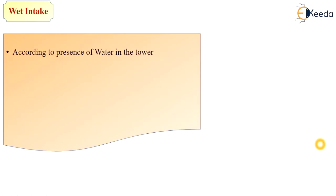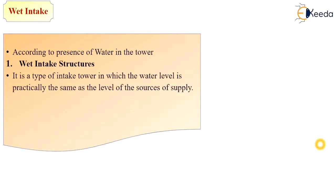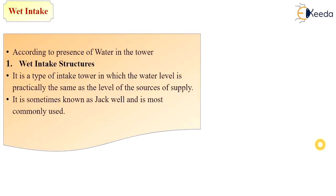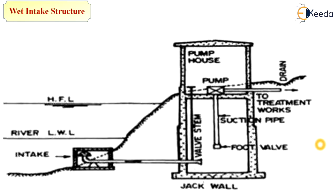According to the presence of water in the tower, the next type is the wet intake structure. Wet intake is a type of intake tower in which the water level is practically the same as the level of the source of supply — that means the whole intake is submerged by the water level. It is sometimes known as a jack well and is most commonly used. As you can see in the diagram, its outlet level for conveying water is equal to the high flood level of water present in the reservoir, river or lake — both levels are the same, with about 80% of the structure below the water level.